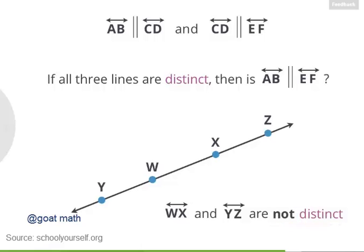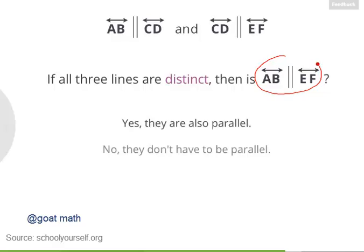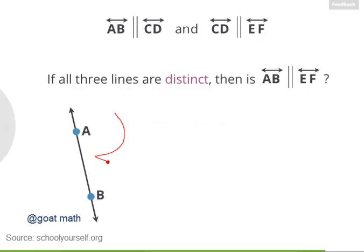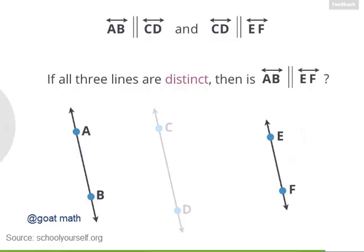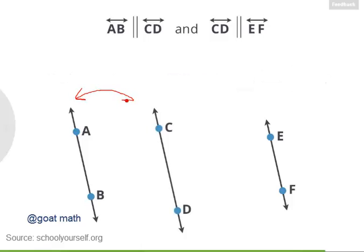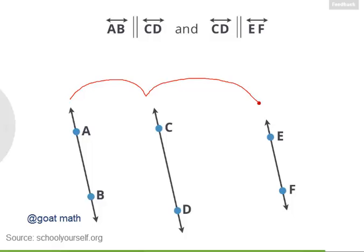Now if the points W and X happen to be on the same line as the points Y and Z, then WX and YZ are now two names for the same line, so we say they're not distinct. So if AB, CD, and EF are all distinct — meaning no two of them are the exact same line — then is AB parallel to EF? Right, AB and EF are parallel. Because the question said all three lines are distinct, that means E and F had to be somewhere else. And sure enough, AB is parallel to EF. So if you ever have two lines that are parallel, and one of them is also parallel to a third line that's distinct from the other two, then all three lines will always be parallel.